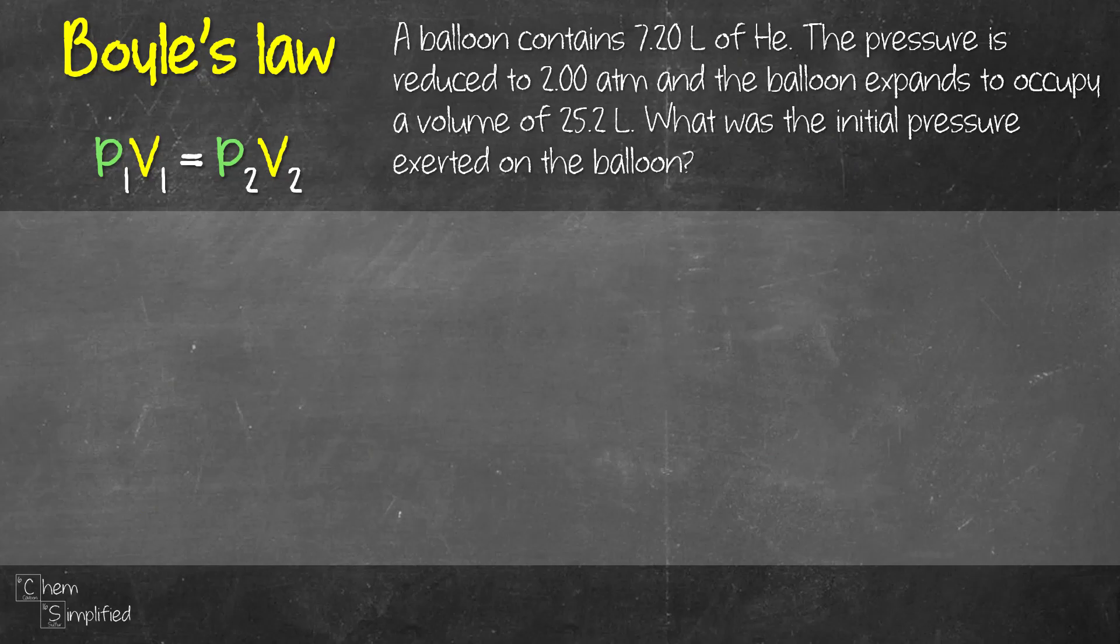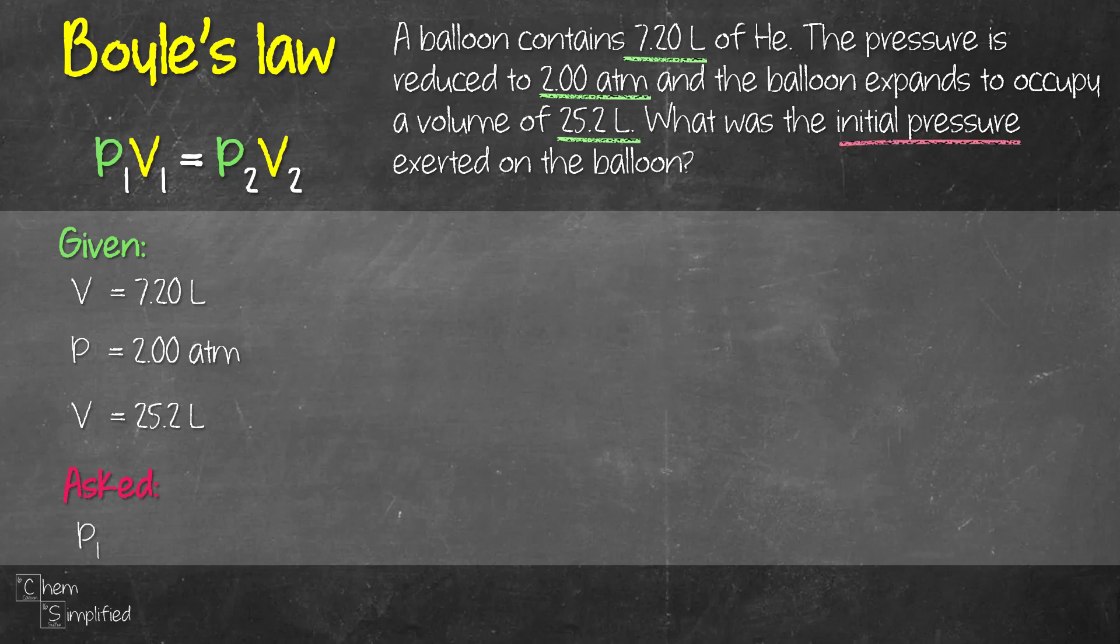Let's look at an example to see how we can apply Boyle's law. From the question, we're given 7.2 liter, 2 atmosphere, and 25.2 liter. The question asks us to find the initial pressure, which means that's P₁. So 2.00 atm is P₂. The balloon starts off at 7.2 liter and then expands to 25.2 liter. That means 7.2 liter is the initial volume, V₁, and 25.2 is V₂.